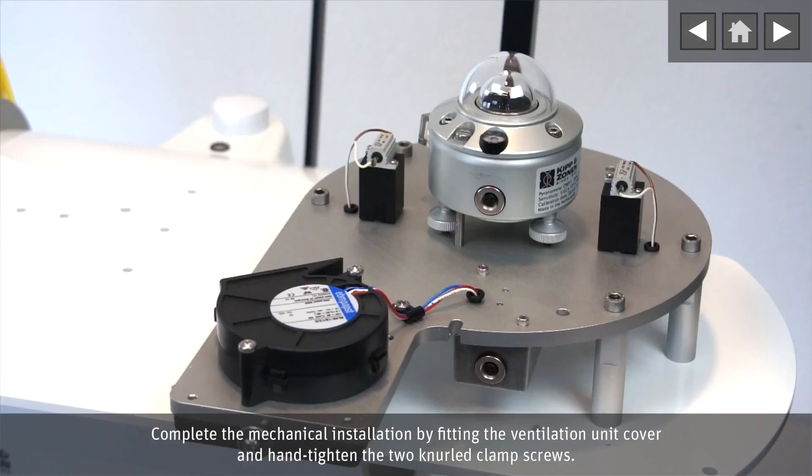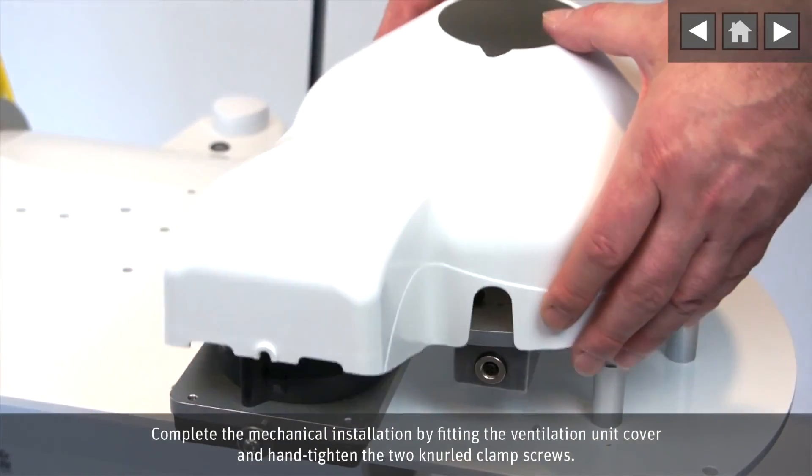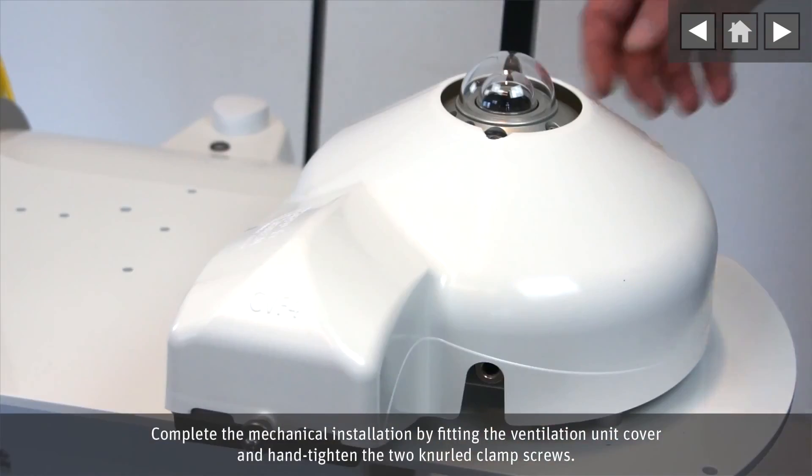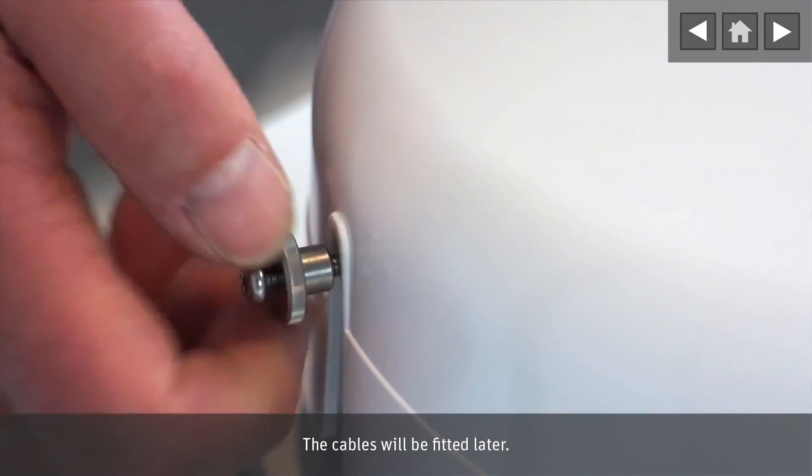Complete the mechanical installation by fitting the ventilation unit cover and hand tighten the two knurled clamp screws. The cables will be fitted later.